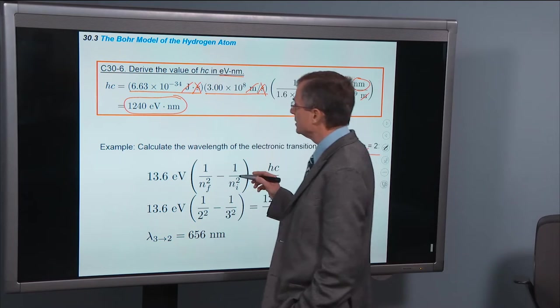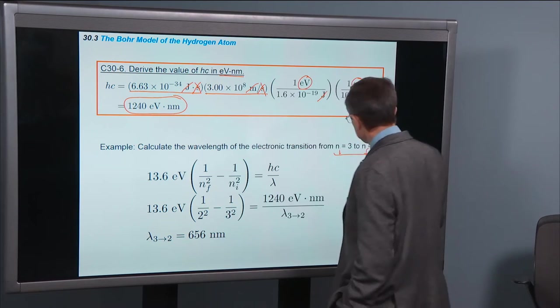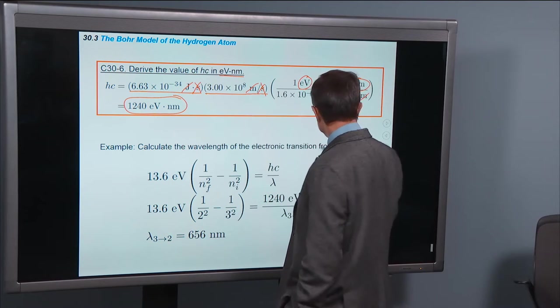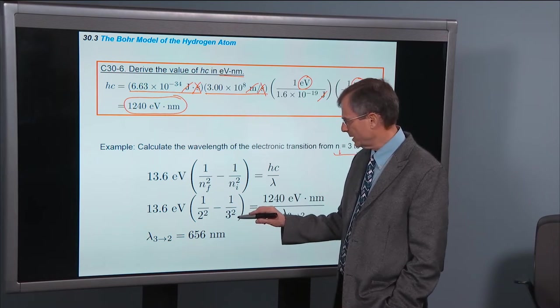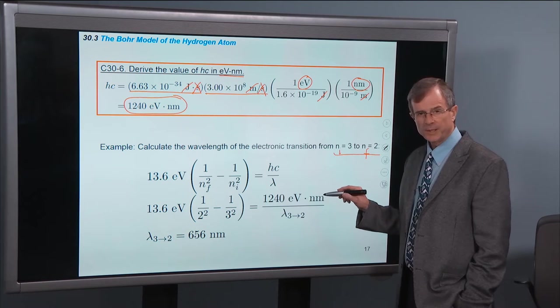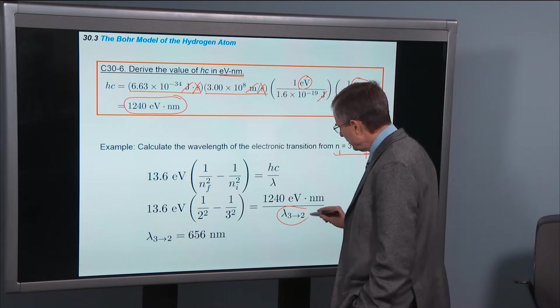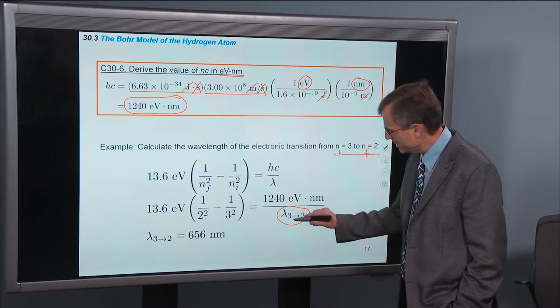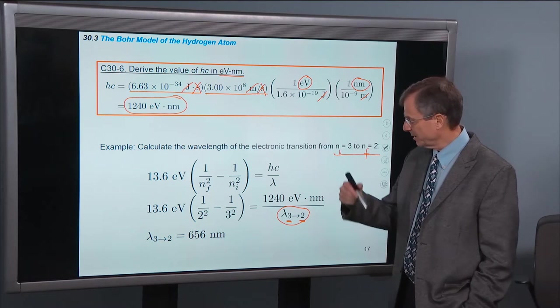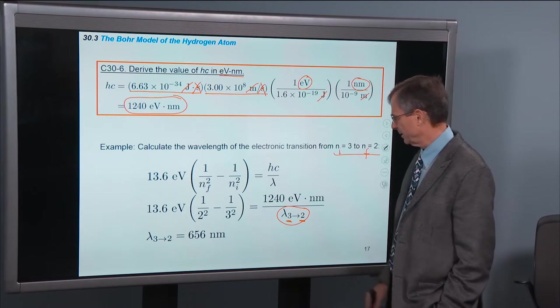Well here's the equation that we just went through and derived. The final is going to be 2, so that'll be 1 over 2 quantity squared. The initial is going to be 3, so that'll be 1 over 3 squared. Hc we just worked out. It's 1240 eV nanometers. And the wavelength we're looking for is the transition from level 3 to level 2. That's what this means. Lambda in going from 3 to 2. This first level will always be higher than the second level.